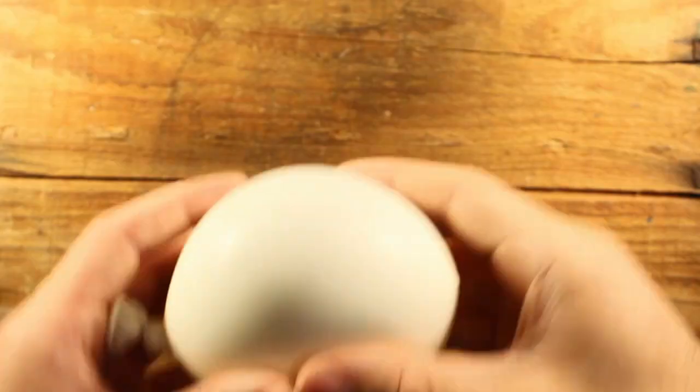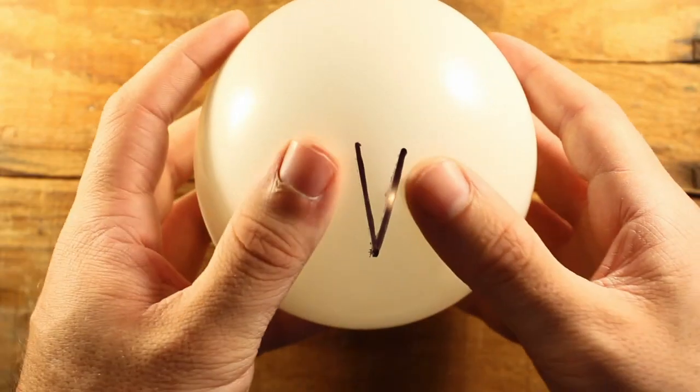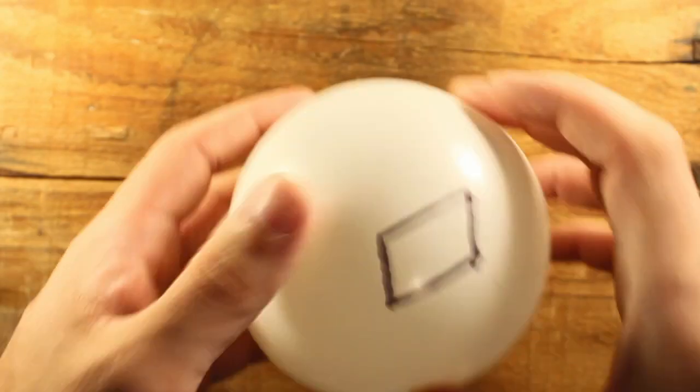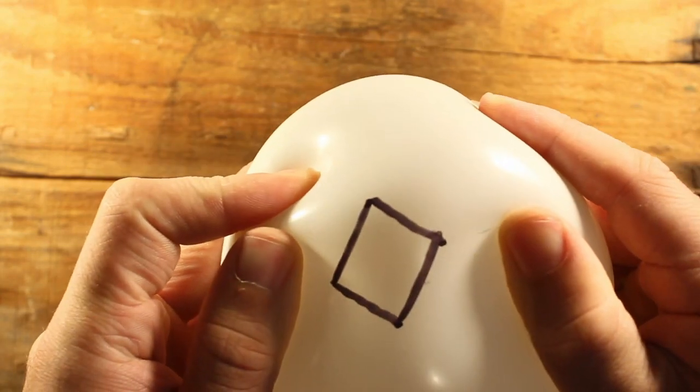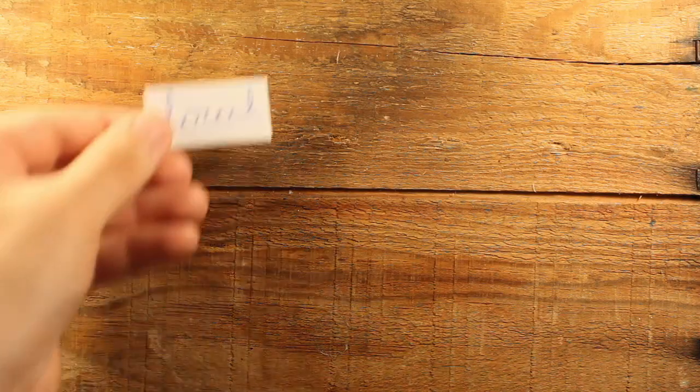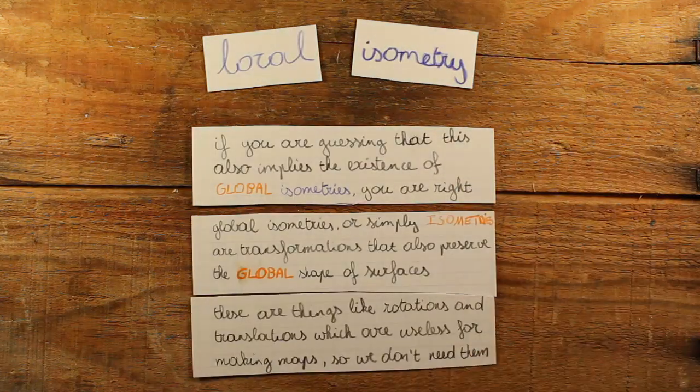On the other hand, a balloon is stretchy, so we can bend straight lines, make angles bigger, or we can turn parallelograms into squares. A bug living on the surface will notice these changes, so in this case, the surface itself does change. In mathematics, a transformation that doesn't change the local shape of a surface is called a local isometry.